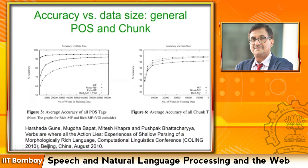There are three curves. Working with word form alone gives the lower curve. With 50,000 words of data, POS tagging accuracy for Marathi is about 80% without morphology. Using even a little bit of morphology — weak morphology — gives accuracy close to 85%, about a 5% improvement. Using strong, rich morphology with sophisticated morphological analysis pushes accuracy above 90%. So with the same 50,000 words: 80%, 85%, and above 90%.